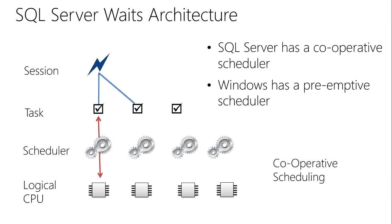This task will then be assigned a worker thread. So we have a session, a task, and a worker thread that is assigned to execute the tasks. When we talk about things running, the only thing that actually runs is a worker thread — we just abstract it all the way up to an application or a user.